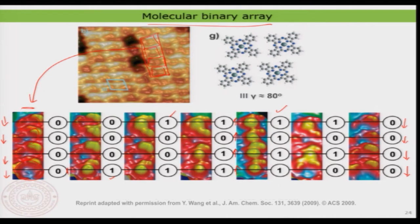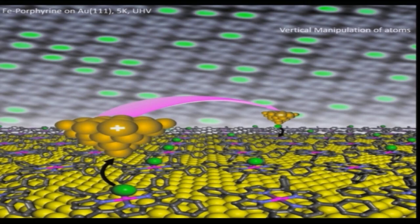In the future you may be using something called molecular computers, where each information bit is substituted by a molecule itself rather than the transistors used currently. There is a huge amount of research going on in this field, where people try to create these kinds of information bits and hope that one day molecules can be used in information storage and similar applications.